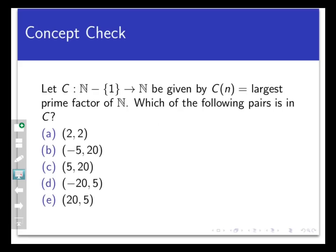So here's a concept check to see how well you get this idea so far. Let's let c be a function that maps the natural numbers minus the number 1, that would be the set of all positive integers from 2 to infinity, into the natural numbers given by c of n is the largest prime factor of n. So here's a list of ordered pairs. Which of the following pairs is in c if we represented c as a set of ordered pairs? Pause the video and select all that apply.